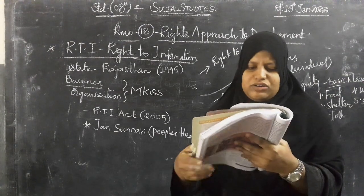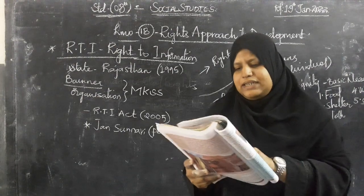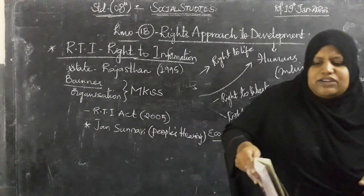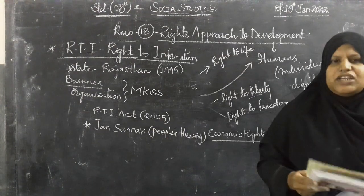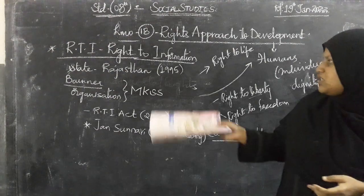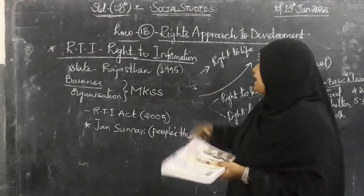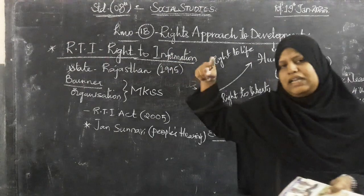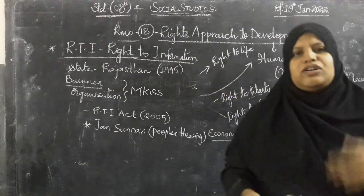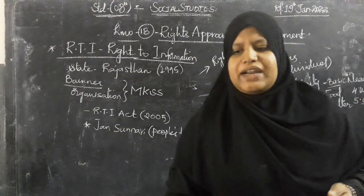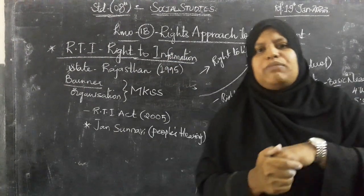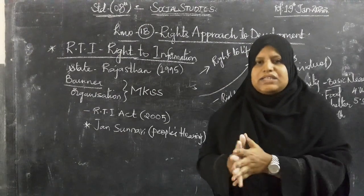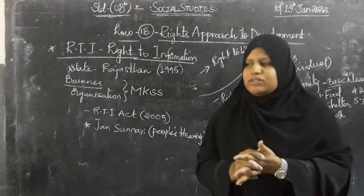In the next class, we will be going to know about the rights of development and RTE — Right to Education Act — about the children. This is about one act. RTI is about right to information, and RTE is the right to education of children — what rights are being given to children's education by the state or the central government. Thank you.